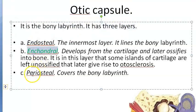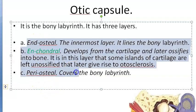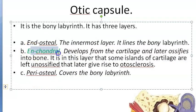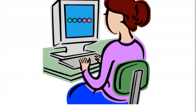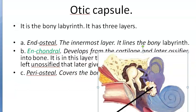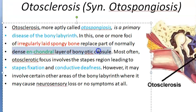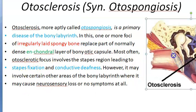The three layers of the otic capsule are endosteal, enchondral, and periosteal. The enchondral layer is the one that should normally be there but gets replaced with spongy bone. 'Enchondral' refers to cartilage — this layer originally comes from cartilage. It is in the middle of the bony labyrinth and is becoming spongy.